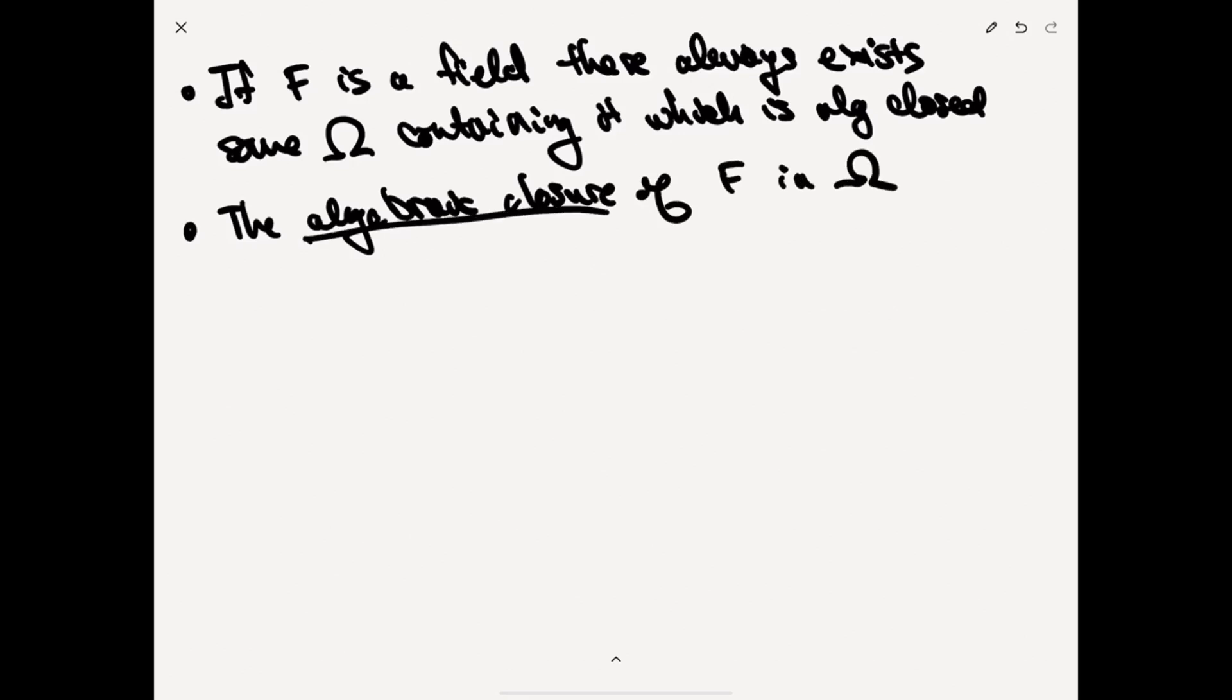is the following. It's the set of elements that are algebraic over F. So it's F bar, this is the set of alpha in omega, such that there exists F of X in F of X, such that F of alpha is equal to zero. So that's the idea.